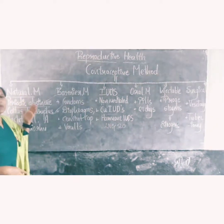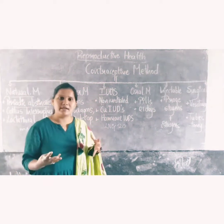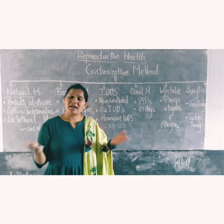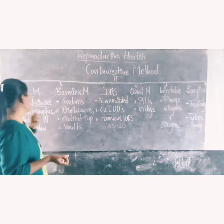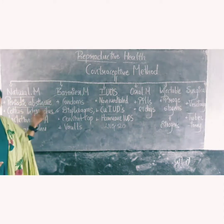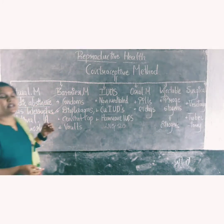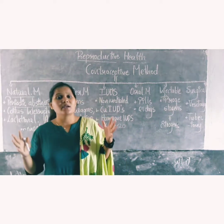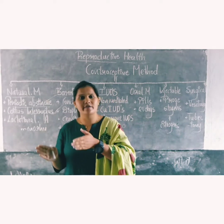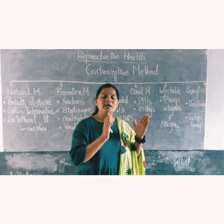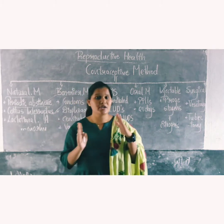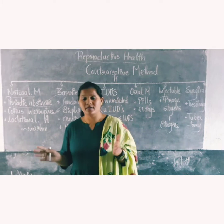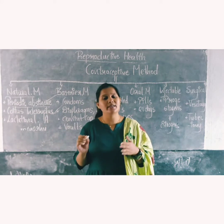The first category is the natural method, also known as the traditional method. Using natural methods, we can prevent unwanted pregnancy and control birth. In the natural method, the first approach is periodic abstinence, where the couple avoids coitus from the 10th to 17th day of the menstrual cycle, because ovulation takes place between days 10 to 17, leading to fertilization. So during this time the couple avoid coitus.